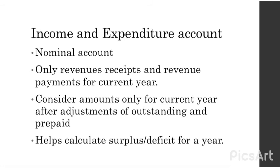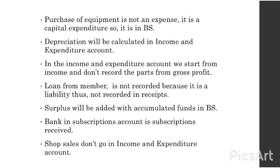In an income and expenditure account we record adjustments such as outstanding and prepaid amounts. We also record only the depreciation amount of equipment because depreciation is a non-monetary item, and we also record interest on loan. The income and expenditure account helps you calculate the surplus or deficit for a year. The purchase of equipment is not an expense — it is capital expenditure, so it goes under the balance sheet. Depreciation is calculated in the income and expenditure account since it is a non-monetary item. Non-monetary items are not recorded in the receipts and payments account. Also, a loan from a member is not recorded in receipts and payments because it is a liability.